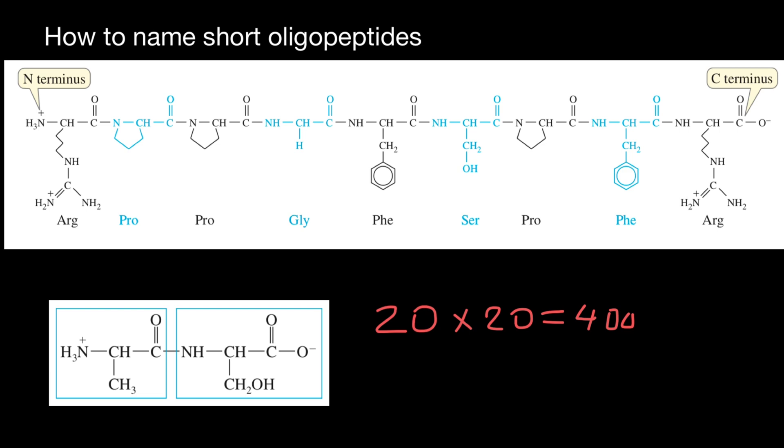So arginine, one-letter abbreviation, is going to be R. Why not A? Because there are a number of amino acids that start with A. And A would be for alanine and not arginine. So we have to take second letter. Next amino acid is proline. And with proline, we just take first letter. So next letter, abbreviation, one-letter abbreviation is going to be P. Next also proline, so also P.